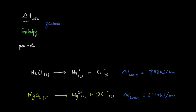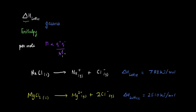One thing to notice is that the lattice enthalpy of MgCl₂ is much higher than that of NaCl. If we think of the ions as charges, we know there will be an electrostatic force acting on them, and the magnitude of this force is proportional to the product of the charges and inversely proportional to the distance. In the case of magnesium, the magnitude of the charge is greater, so the electrostatic force is stronger, and therefore a higher energy is required to break this bond.